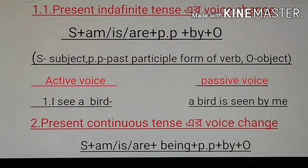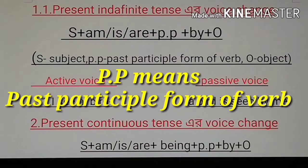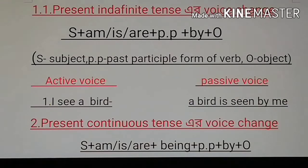The first tense we will see is present indefinite. The formula for passive voice is: subject + am/is/are + past participle (PP) + by + object. For example, 'I see a bar' is written in active voice. Its passive form will be: 'A bar is seen by me.'